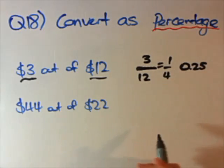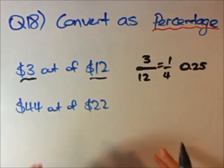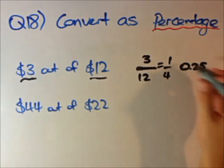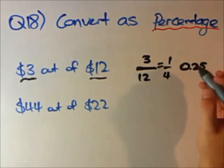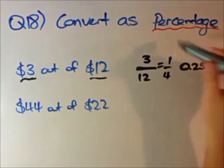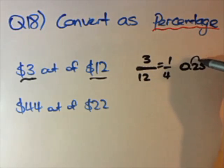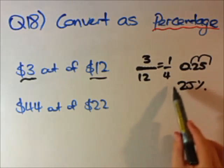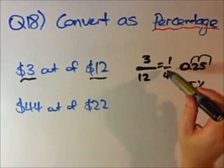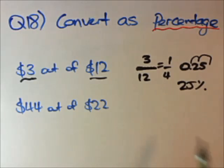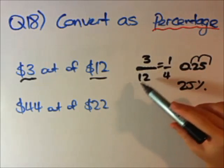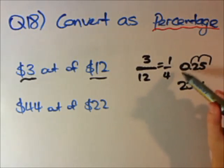If you times this quarter by 4 you get a full cake, so if you times 0.25 by 4 you have a full cake. The reason I did this is it makes it easier to convert to a percentage by purely moving the decimal point two places to get 25%. You could have jumped straight to knowing a quarter equals 25%, but I wanted to make sure this step is clear.